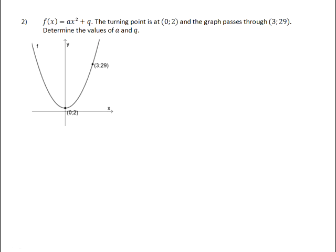Question 2: f(x) equals ax squared plus q. The turning point is at (0, 2) and the graph passes through (3, 29).